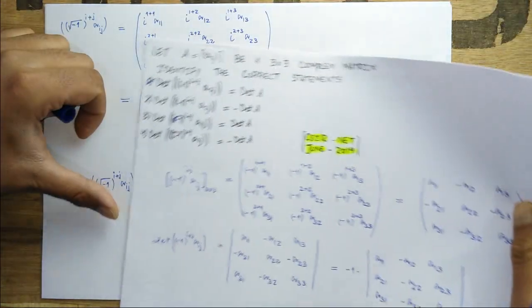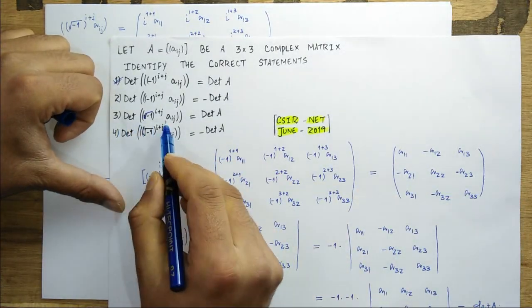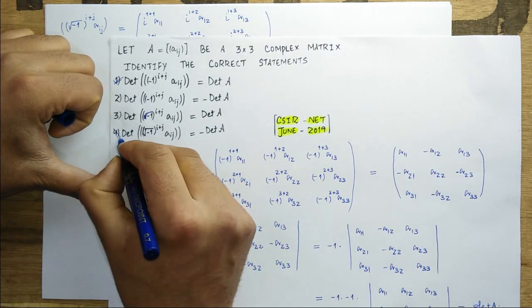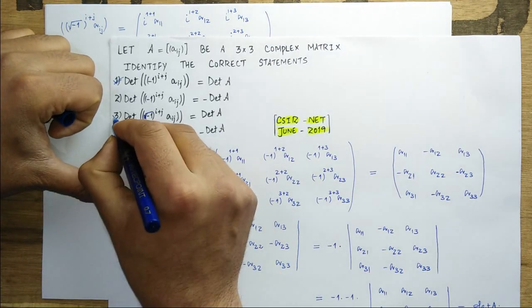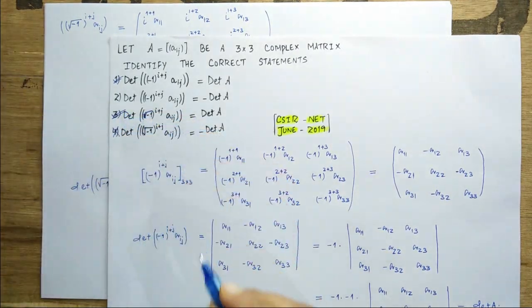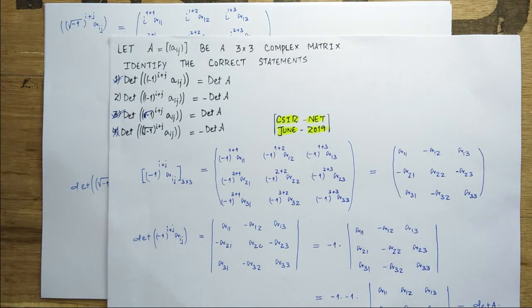So the determinant of the (-1)^(i+j) matrix equals det(A), and the determinant of the (√-1)^(i+j) matrix also equals det(A). Therefore option number one and option number three are correct.